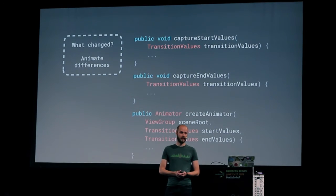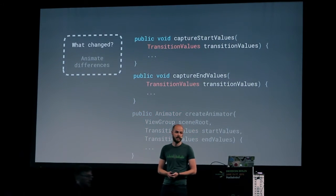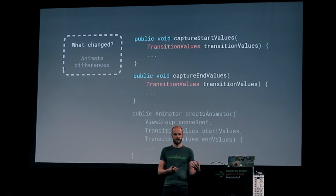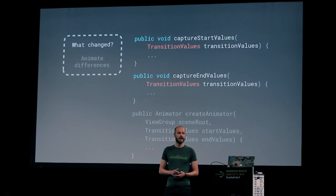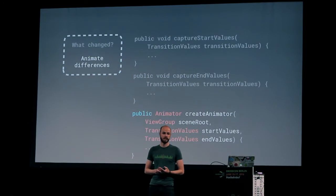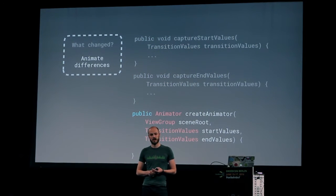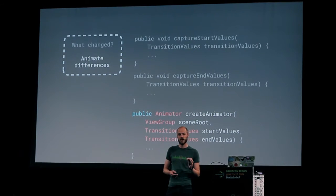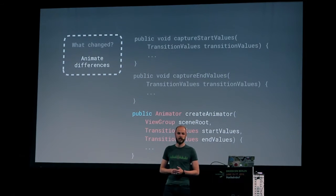The core differences are being captured within a couple of methods. There's capture start and end values to make sure that the views being transitioned — the starting and the ending view — are available and how they have changed. Then there's an animator being created, and that animates the changes in between. It's quite powerful. Most of you won't have to work with it, but once you dive into transitions to a level where you want to create your own, those are the methods you'll need to look at.